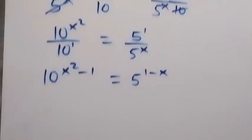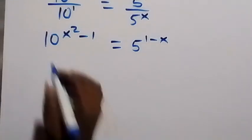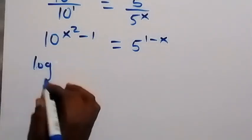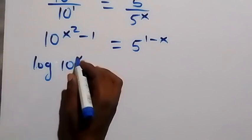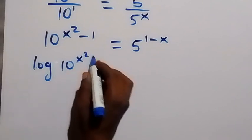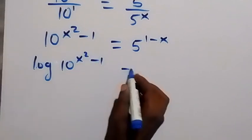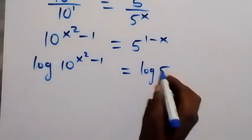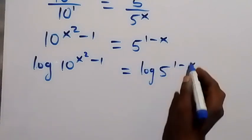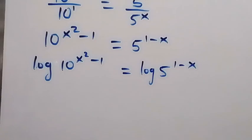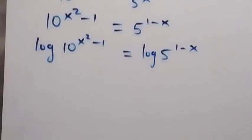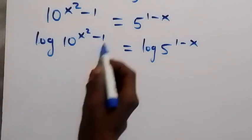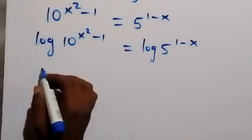From here we take the log on both sides. We get log of 10 raised to power x squared minus 1, equals log of 5 raised to power 1 minus x. Then we apply the power law of logarithm — we bring the power to the front.